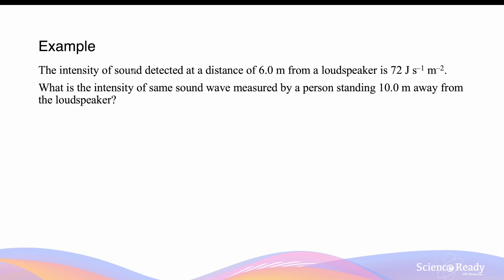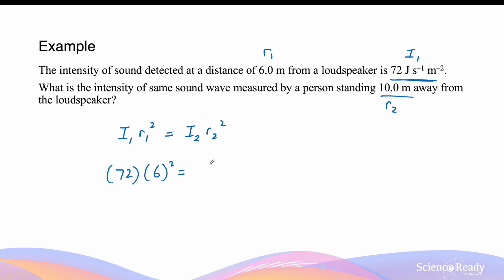Let's go through an example. The intensity of sound detected at 6 meters from a loudspeaker is 72 joules per second per meter squared — call this I₁ with r₁ = 6 m. What is the intensity at 10 meters away (r₂ = 10 m)? Using I₁r₁² = I₂r₂²: 72 × 6² = I₂ × 10², so I₂ equals 25.92 joules per second per meter squared.